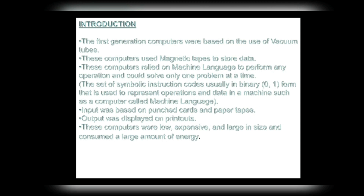These computers relied on machine language to perform any operation and could solve only one problem at a time. Machine language is the set of symbolic instruction codes — usually in binary (zeros and ones) — used to represent instructions and data in a machine such as a computer. Input was based on punched cards and paper tapes; output was displayed on printouts.